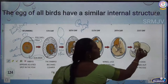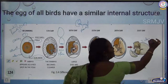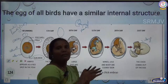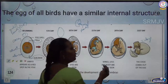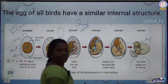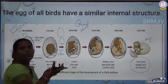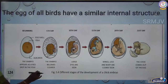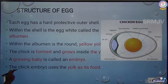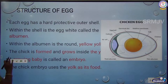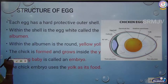After 21 days, when the embryo has fully developed using the yolk as food and the air space for oxygen, the egg hatches — the shell breaks and the small chick comes out. These are the different stages of the growing egg.